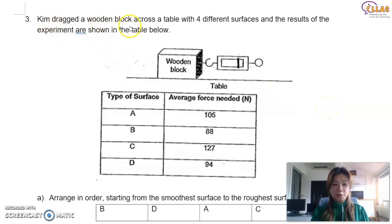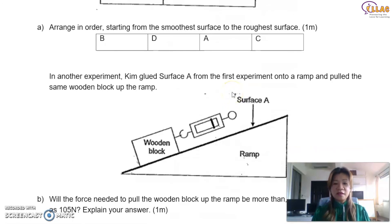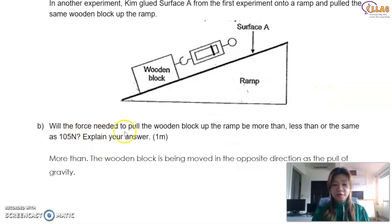Last question, let's look at this. Kim dragged a wooden block across a table with four different surfaces, and the results of the experiment are shown in the table below. So you see that different amount of forces is needed for different surfaces. Remember, the rougher the surface, the more force is needed. So this is 105, 88, 127, 94. So straight away, we know a range in order starting from the smoothest to the roughest. So the smoothest definitely will be the lowest, which is B over here, and D is the second one, followed by A, 105, and the hardest to pull across will be C. So now in another experiment, Kim glued surface A over here, the number third smoothest from the first experiment onto a ram over here. So they stick it over here, and they pull the same wooden block up the ram. So will it be harder to pull? So will the force needed to pull the wooden block up the ram be more than, less than, or the same. As you can see, the answer says here, more than. So why is that so?